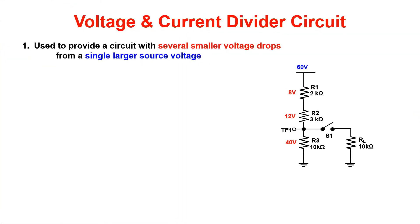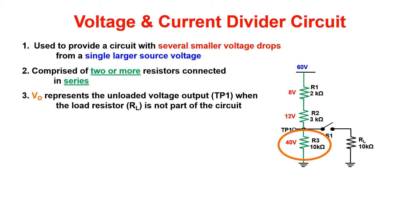Voltage and current dividers are used to provide a circuit with several voltage drops from a single higher source voltage. It is comprised of two or more resistors connected in series. VO represents our unloaded voltage. This is when the load resistor, or RL, is not part of the circuit.